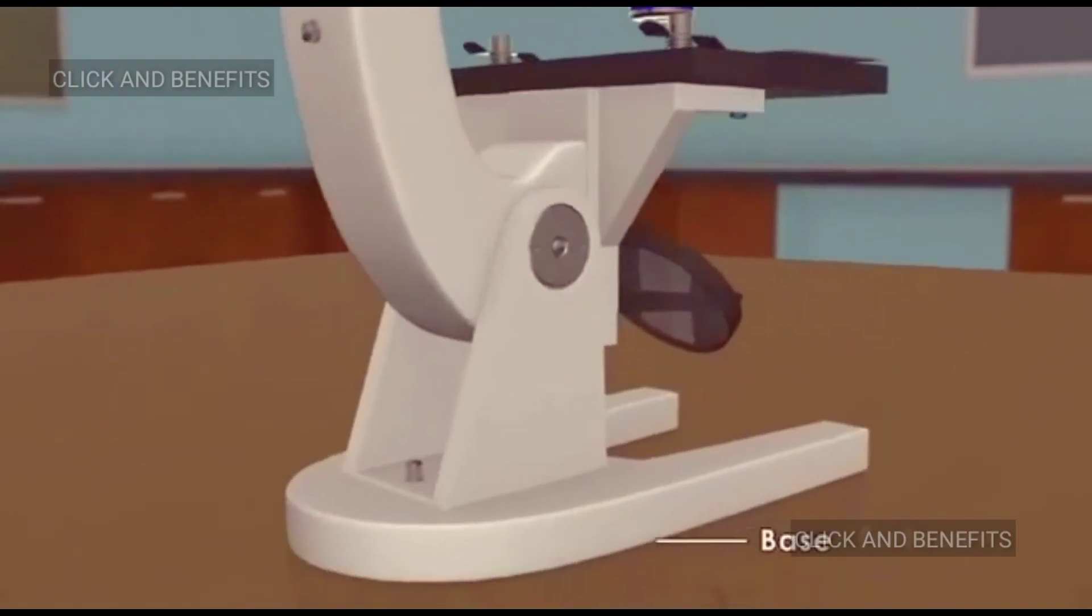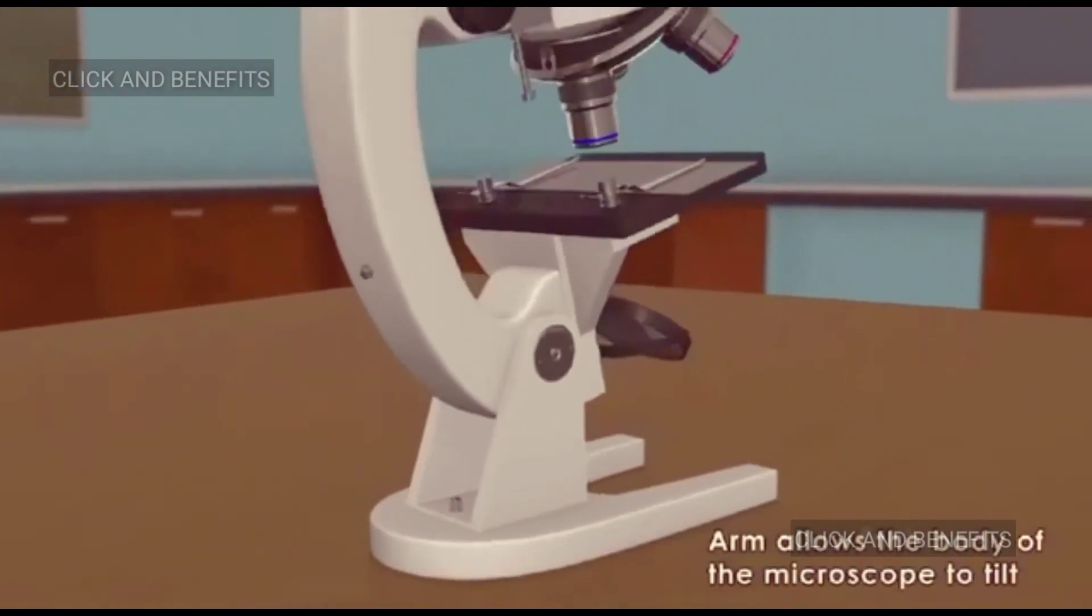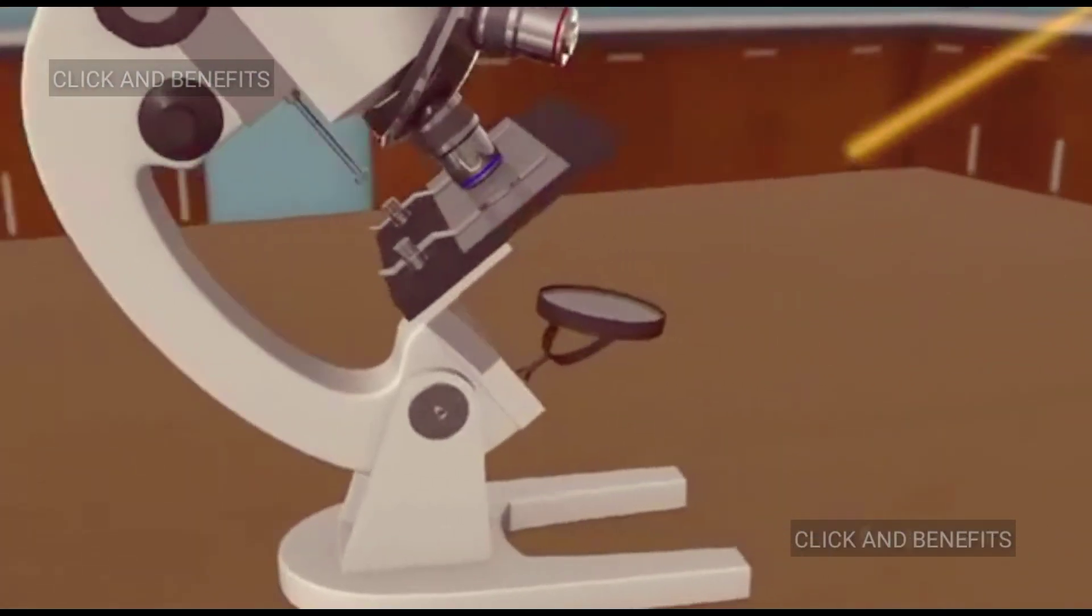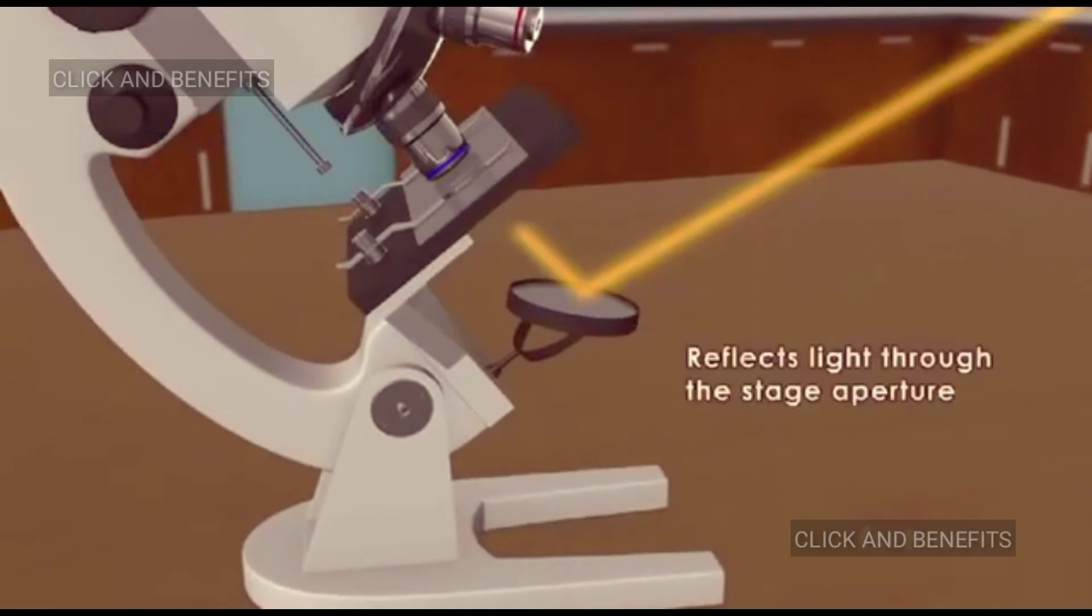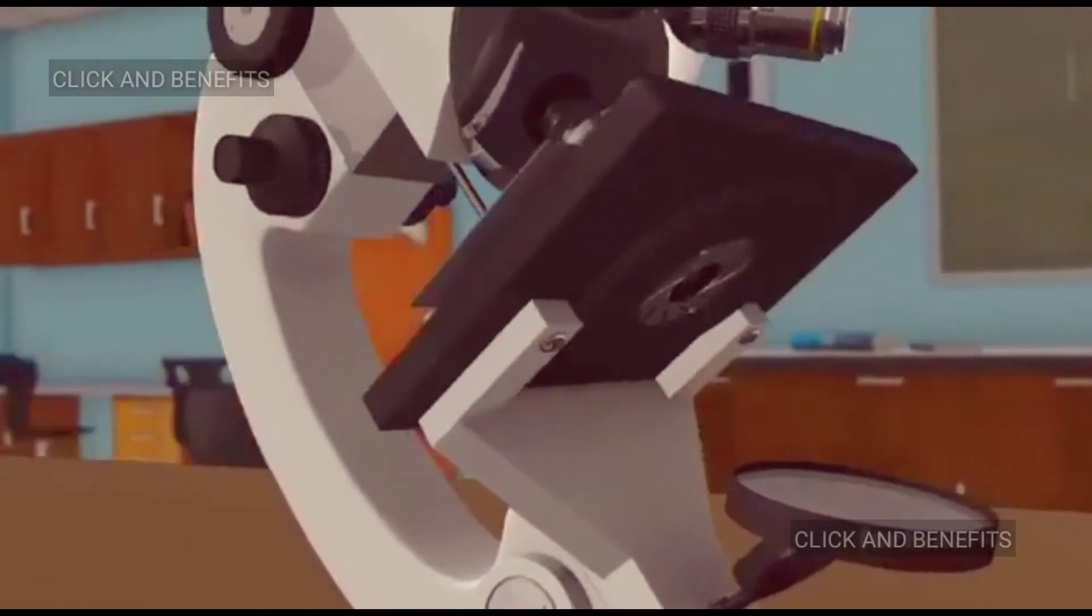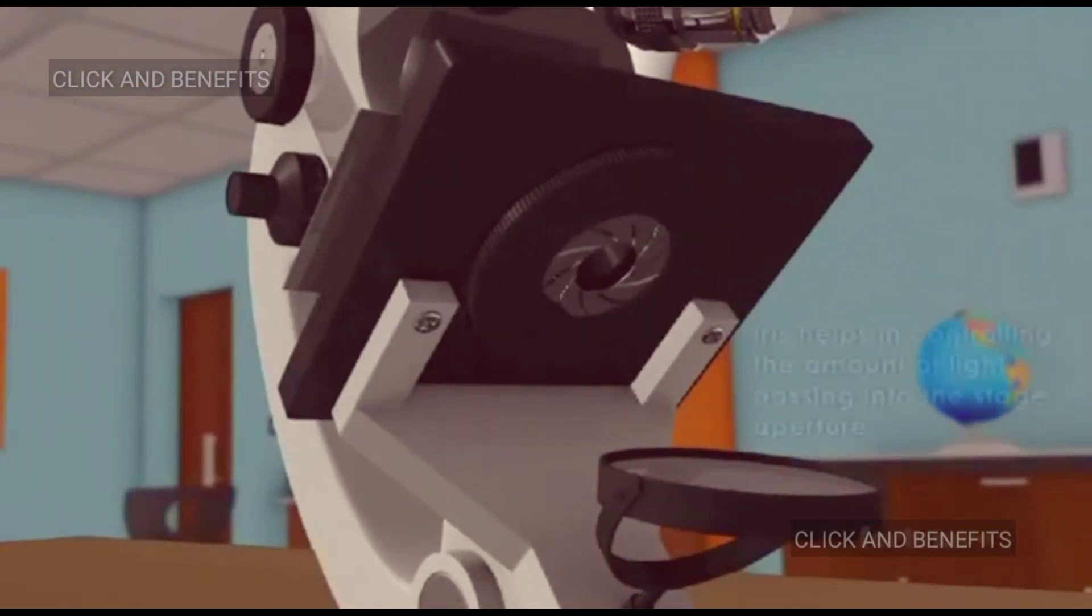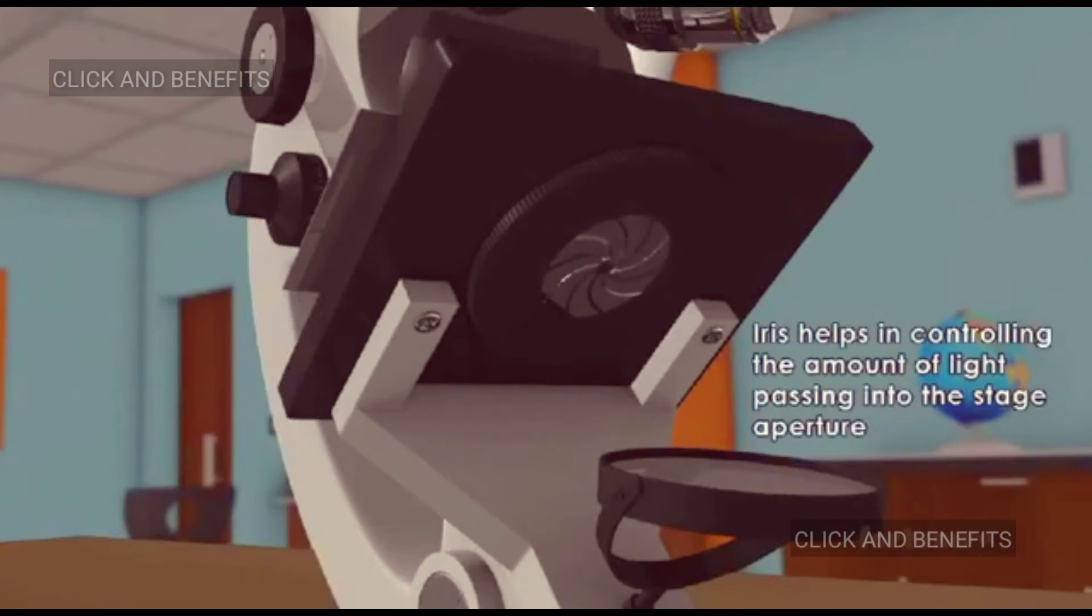The body tube is arranged on an arm which is connected to a strong base. This arm allows the body of the microscope to tilt. A small mirror at the base of the microscope reflects the light through the stage aperture. Above the mirror, an iris, also known as a diaphragm, is present. The iris helps in controlling the amount of light passing into the stage aperture.